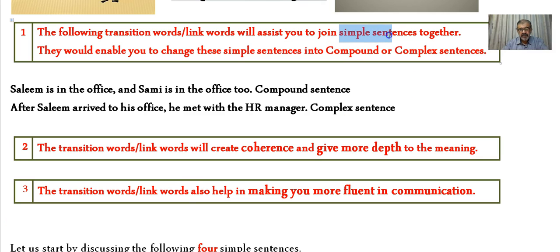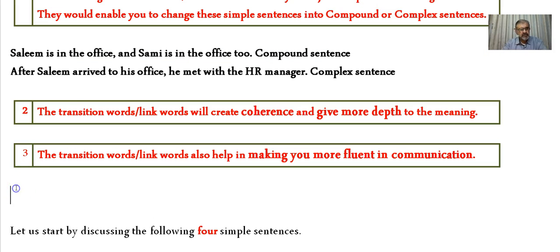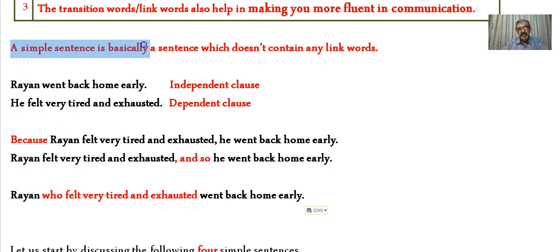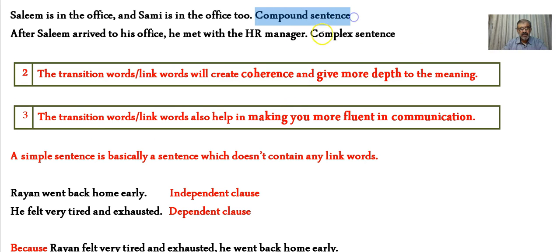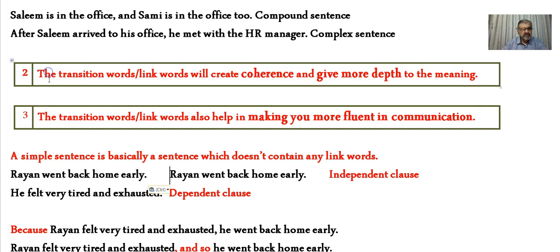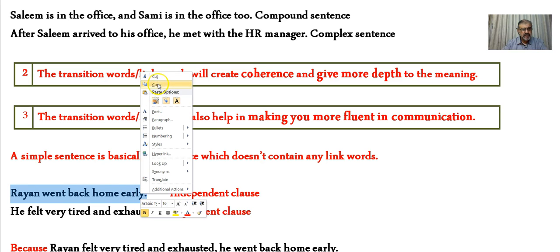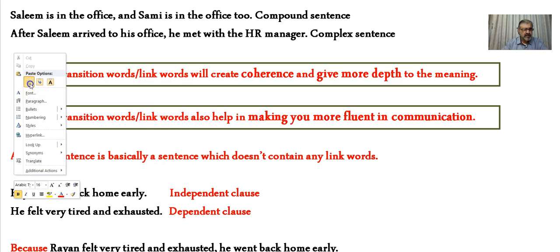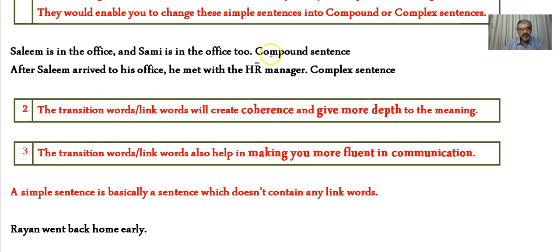Now we need to know what a simple sentence truly is. A simple sentence is basically a sentence which does not contain any link words. What makes a simple sentence different from a compound or complex sentence is the absence of link words. For example, 'Ryan went back home early' is a simple sentence because it contains no link words.